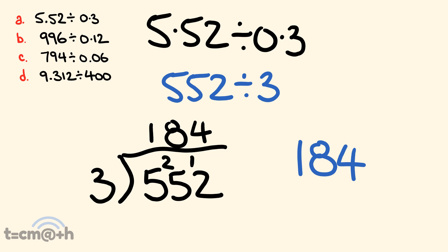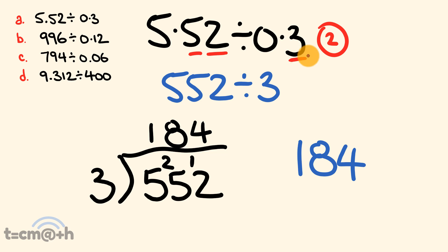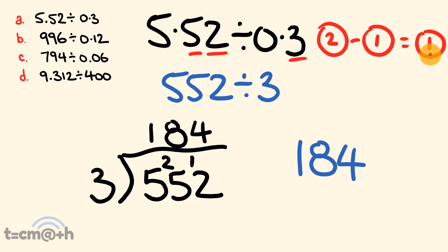Where is the decimal place going to go? We look at our original numbers. We have 5.52, which has 2 numbers to the right of the decimal place. We are dividing by 0.3, which has 1 number to the right of the decimal place. To work out how many decimal places, we simply subtract: 2 take away 1 equals 1. So we're going to have 1 number to the right of the decimal place. We move 1 place in and our answer is 18.4. Pretty easy — if you follow those steps you will be fine.